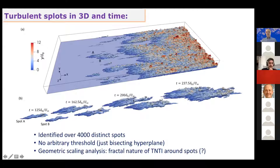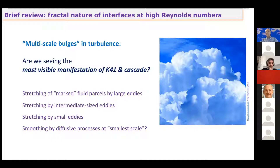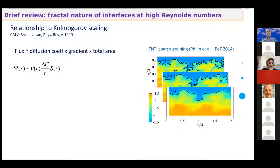Now, what are we going to do with this? I hinted at interest in scaling properties of this interface. Let me review some rather old material. When you look at a cumulus cloud, I believe that is probably the most visible manifestation of the Kolmogorov cascade of turbulence — big eddies stretch big bulges of scalar marker (tiny water droplets), then smaller scale eddies bulge at smaller scale and so on. There are measurements of the fractal nature of this kind of surface. Let me review a very old argument about how this is related to Kolmogorov scaling.